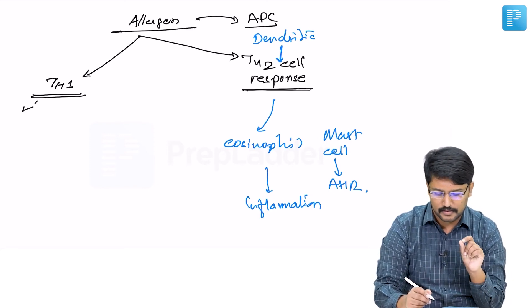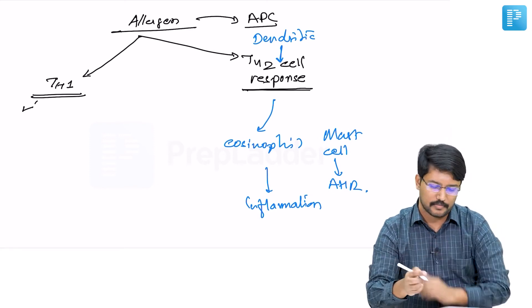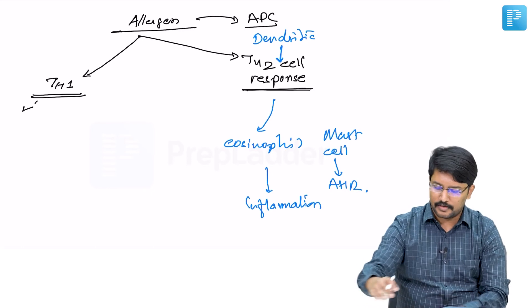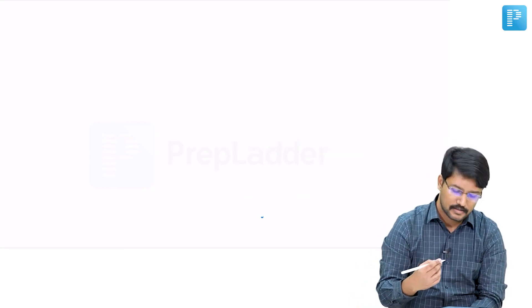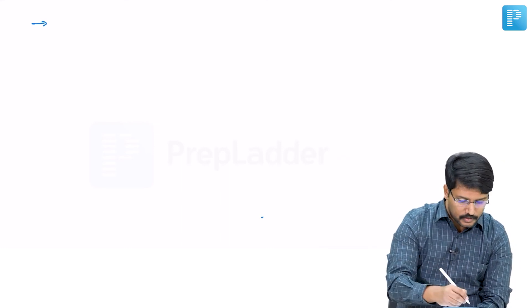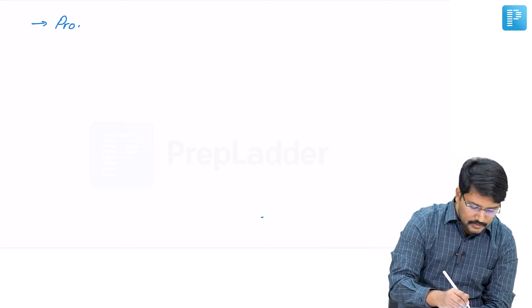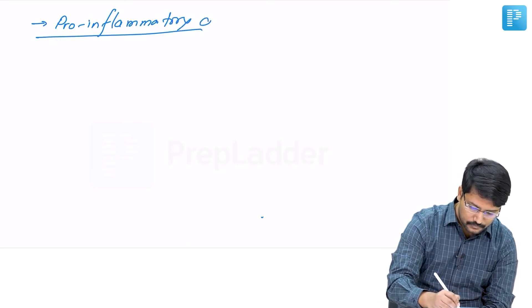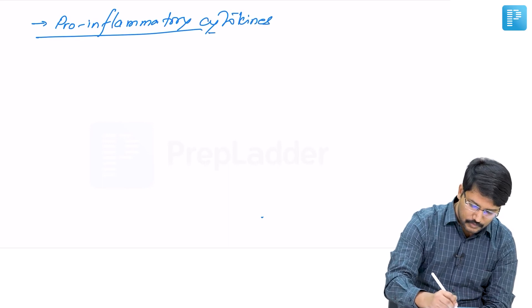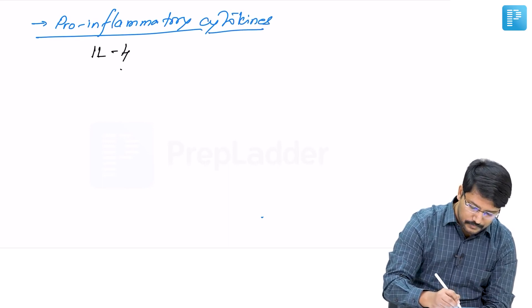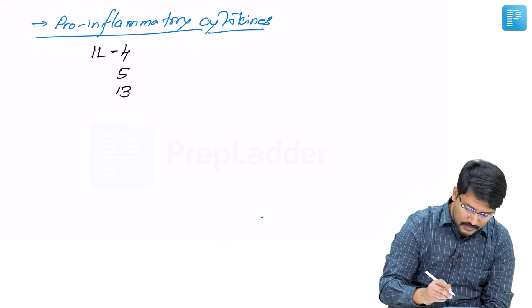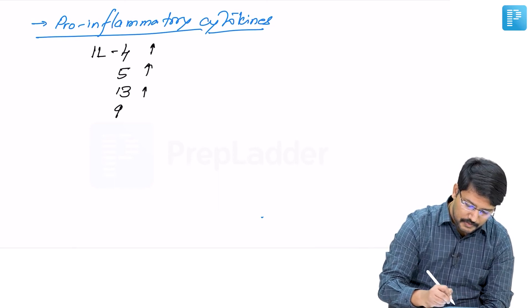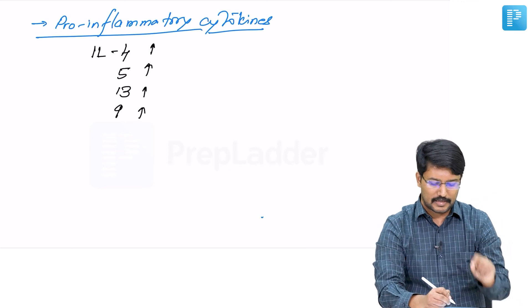These things carry out their action mainly by certain cytokines. There are pro-inflammatory cytokines and anti-inflammatory cytokines. The pro-inflammatory cytokines that we see in patients with bronchial asthma are interleukin 4, 5, 13, and 9. These levels are elevated in patients with bronchial asthma and these are pro-inflammatory cytokines.